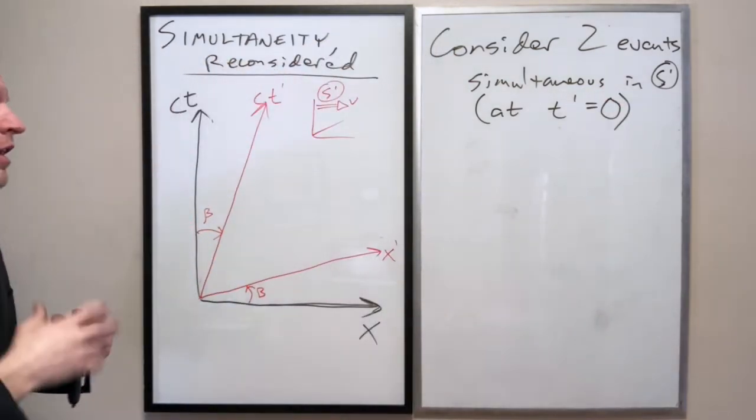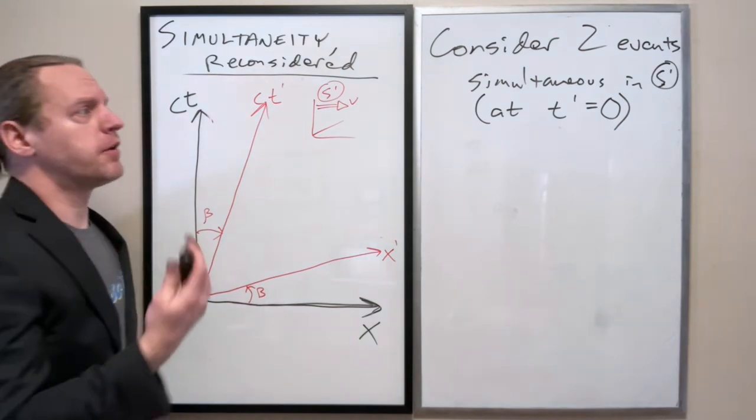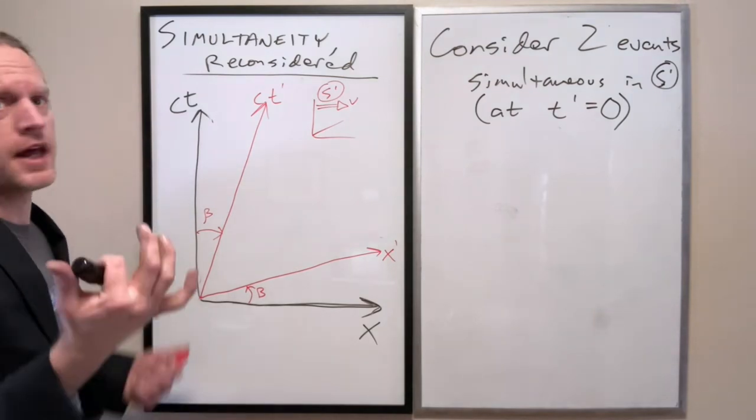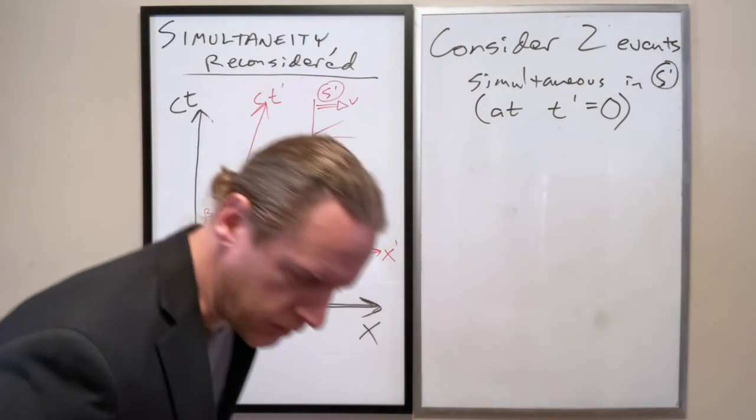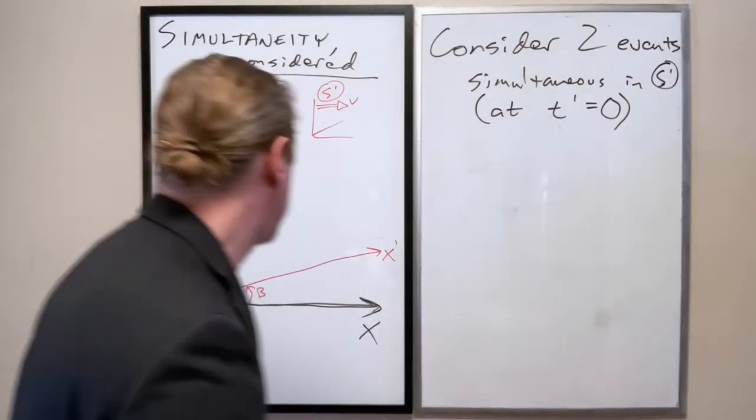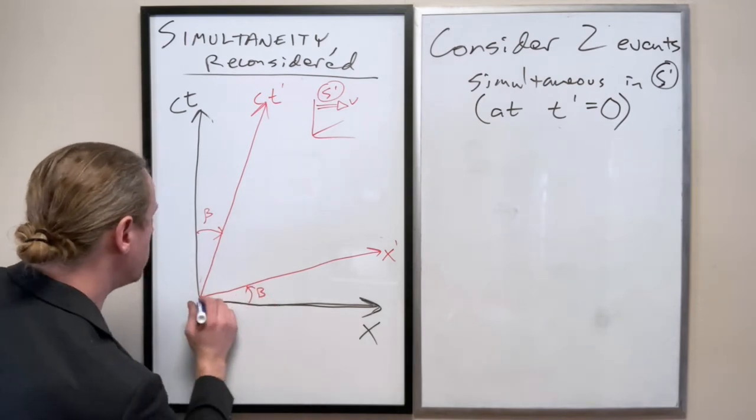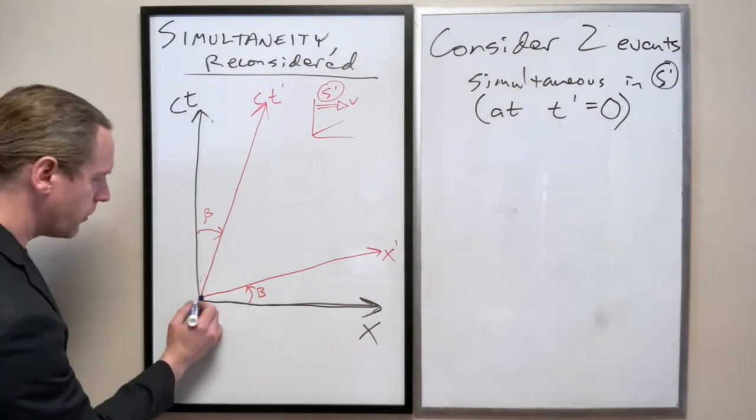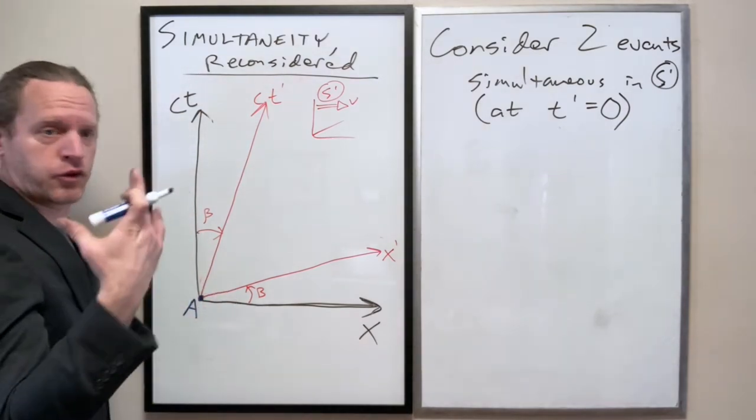Remember, we have to go by their clock. So if they're both happening at t prime equal to zero, what that means is that if we look on this diagram here, we can denote, and I'll use blue, one event at the origin. So here is event A happening at t prime equal to zero and x prime equal to zero.